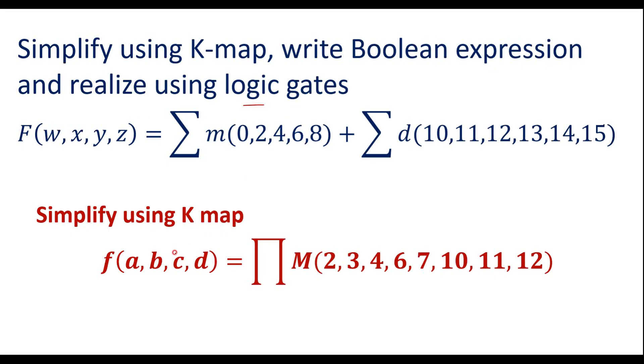The another function is the max term that is given, and we have to simplify this using kmap. Let me consider the first one.